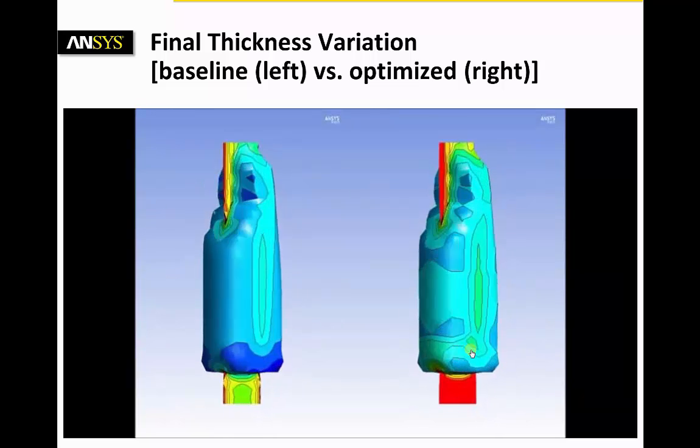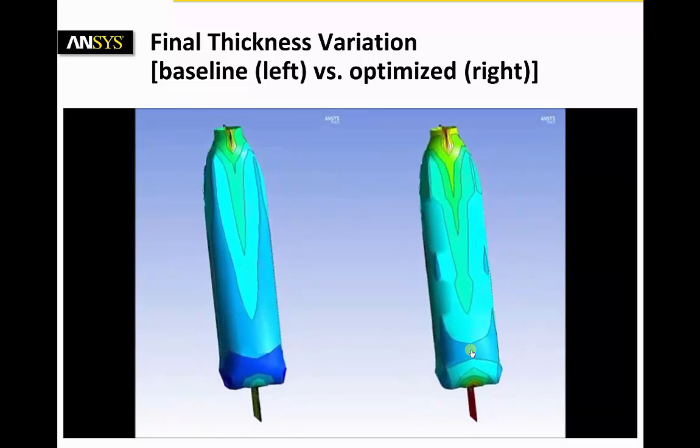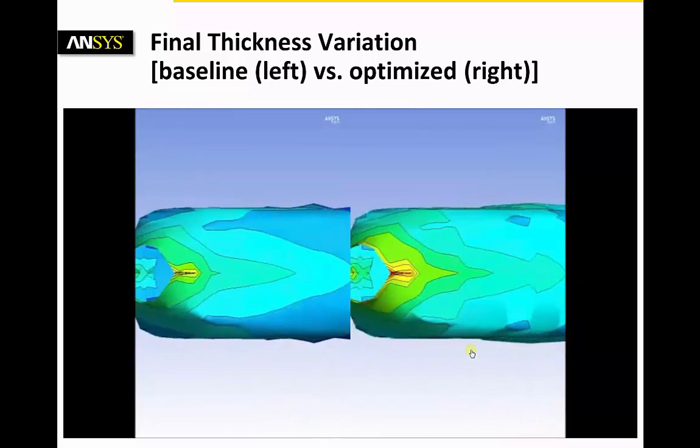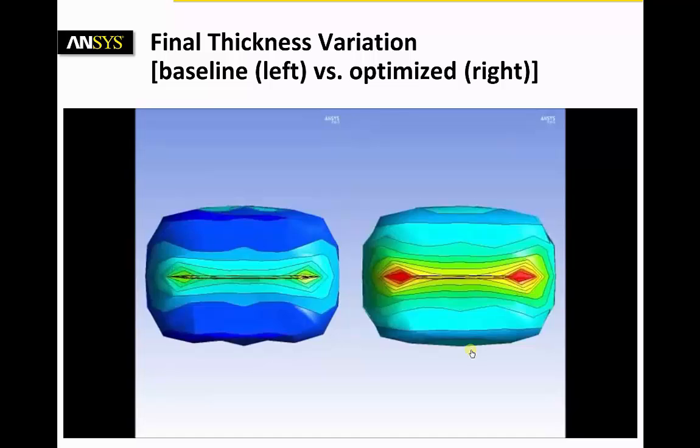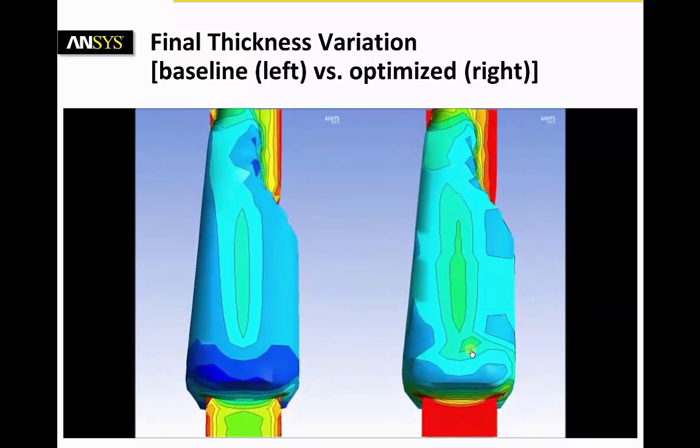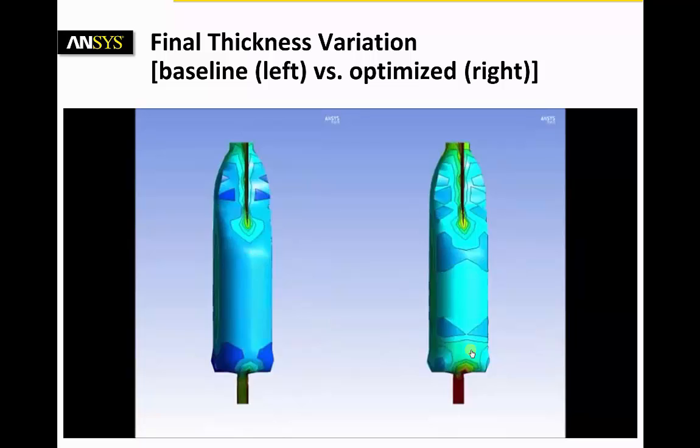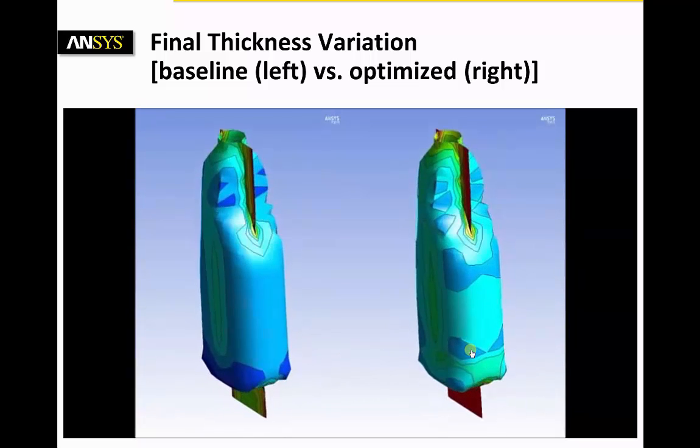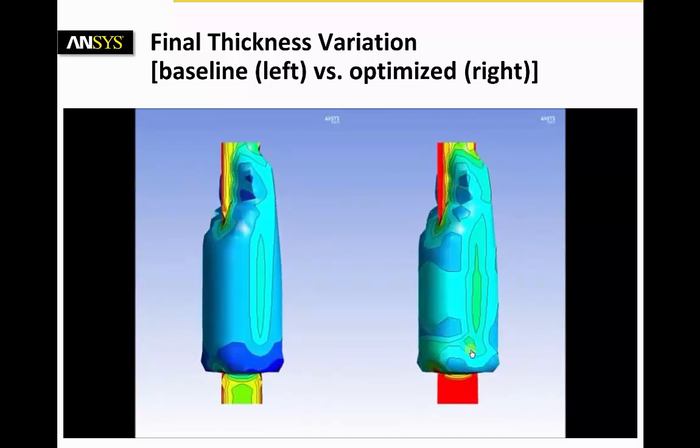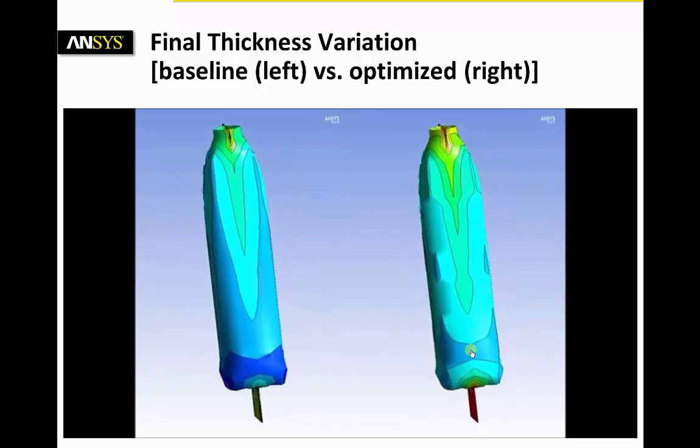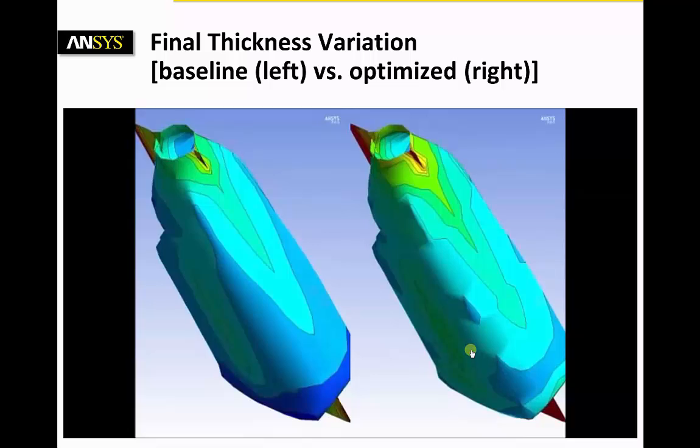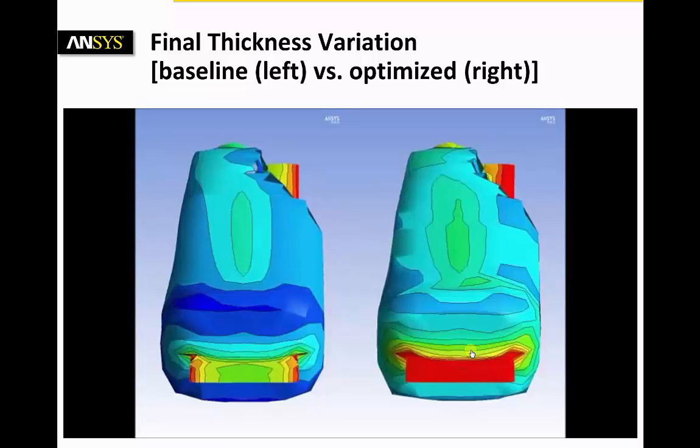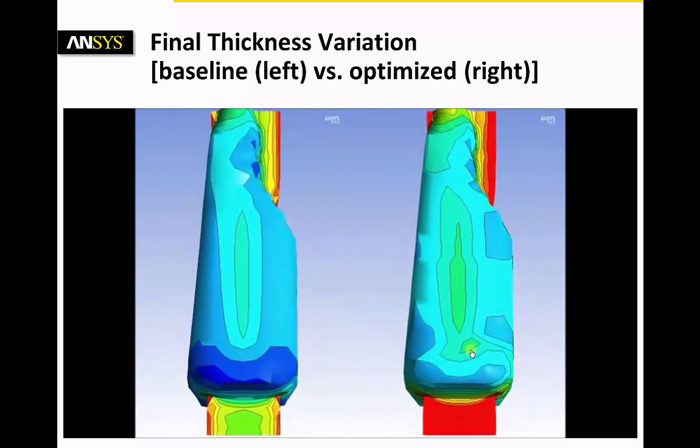We are looking at the final thickness variation comparison between the baseline design and the optimized design. It is worth noting that while the final weight of the optimized design is higher, the minimum thickness has increased substantially more than the net increase in overall bottle weight. The weakest spot, the bottle corner, has been simply eliminated.